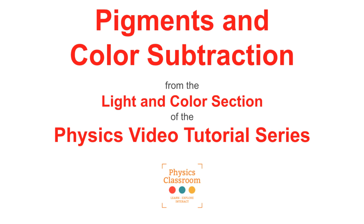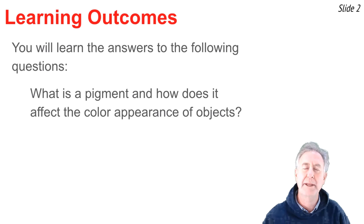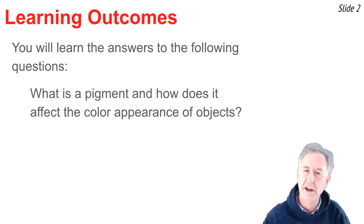Welcome to the Physics Classroom's video tutorial on light and color. The topic of this video is pigments and color subtraction. The question we wish to answer is: what is a primary pigment and how can it affect the color appearance of an object?